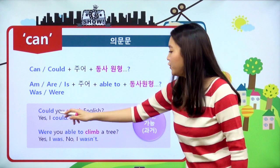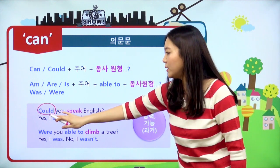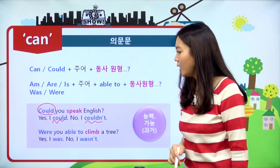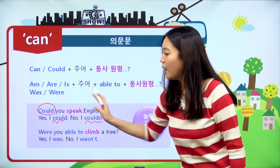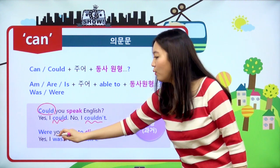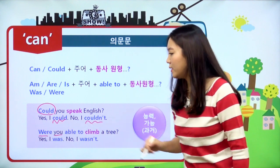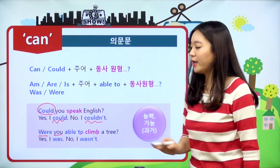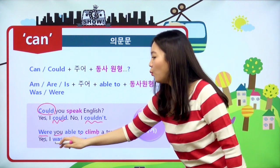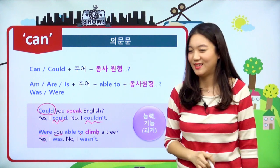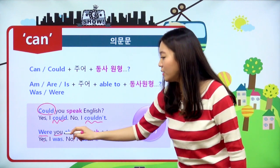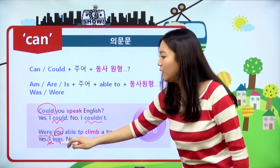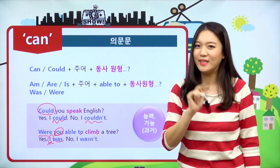과거형 한번 살펴볼게요. Could you speak English? 여기 앞에 can이 could로 변했어요. could로 물어봤으니까 대답도 could나 couldn't로 대답을 해야 되고요. be동사는 어떻게 될까요? 주어가 you이고 과거형이기 때문에 were이 됐어요. Were you able to climb a tree? 대답은 Yes, I was 혹은 No, I wasn't. you로 물어봤으니까 I로 대답하고요, 주어가 I니까 당연히 was로 바뀌어야 된다는 거 꼭 잊지 마세요.